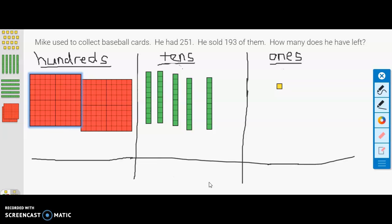We do have a problem here, so let's read it. It says Mike used to collect baseball cards. This used to be a popular thing boys and girls, I'm not sure if any of you do that anymore, but it used to be when I was a kid. It says he had 251, he sold 193 of them.